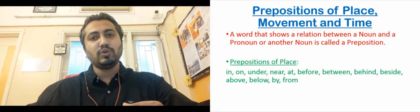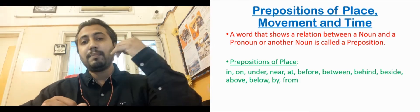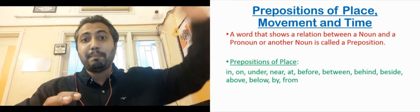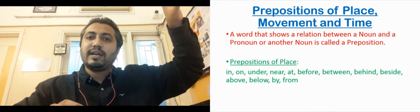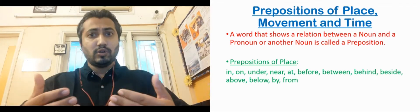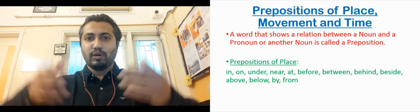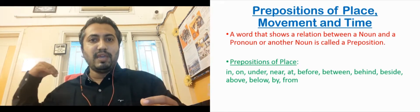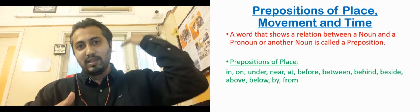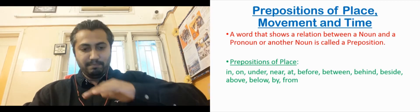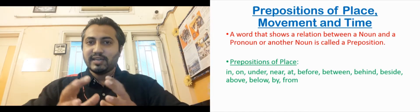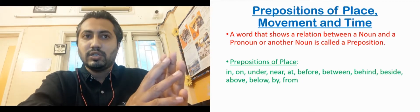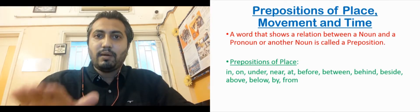'Under' means something is already present beneath something. 'Near' means something is close by — nearby. 'At' means at a particular exact place — for example, the parents will meet at the school, to indicate a specific location. We use the preposition 'at' to show a particular place.